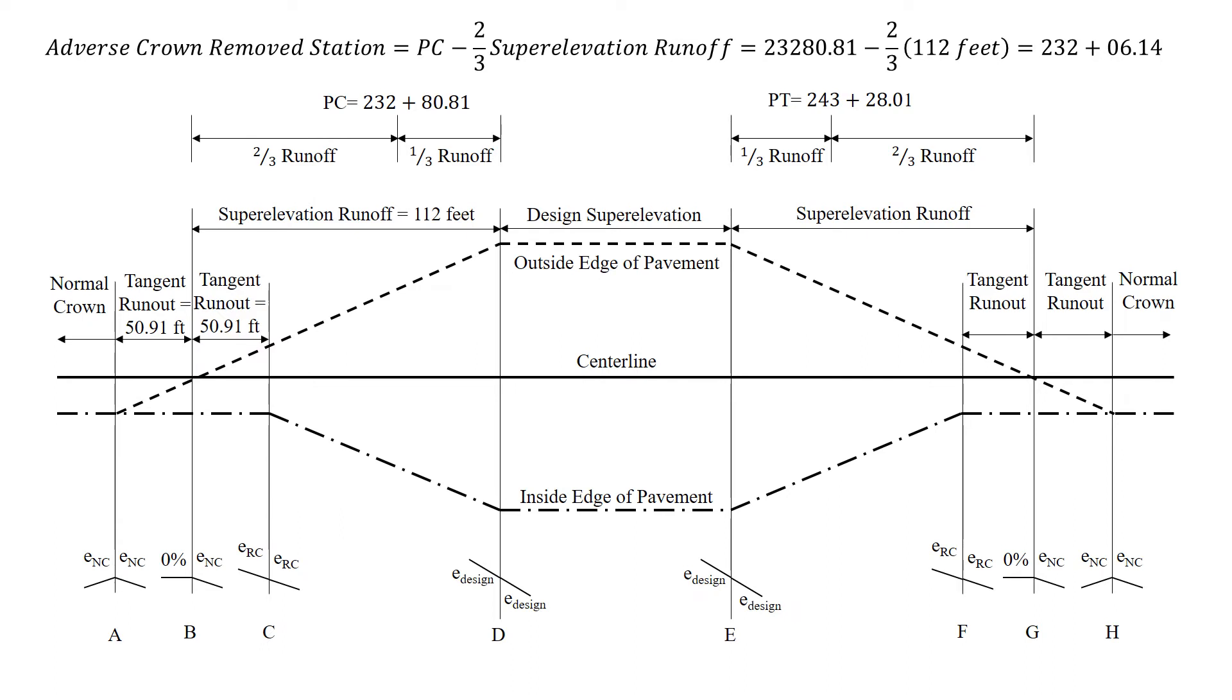That's very close to the point we're interested in, which is station 232. So that's point B labeled on this diagram. But specifically, we want to find how far that adverse crown removed is from our point of interest station 232. So we're going to subtract that location, adverse crown removed from our point of interest, and we're going to get 6.14 feet for that distance.